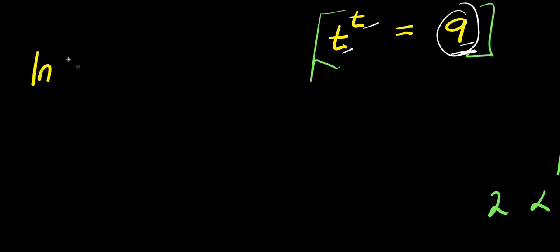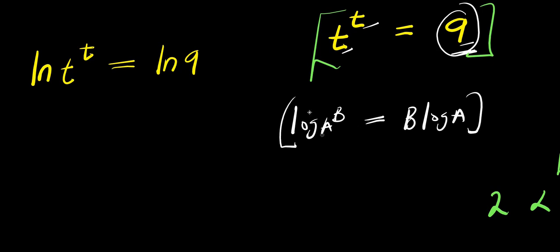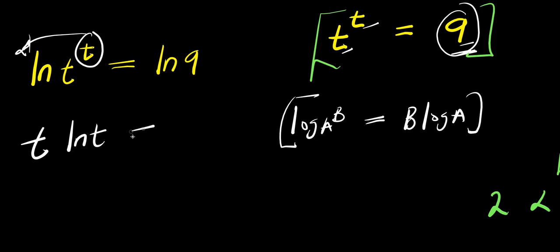We take ln of t to the power of t equals ln of 9, then we apply the logarithm power property: log of a to the power of b equals b times log of a. This property applies to natural log as well, so the t comes in front and we have t times ln t equals ln 9.